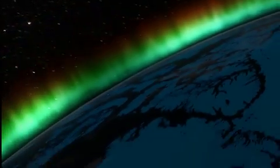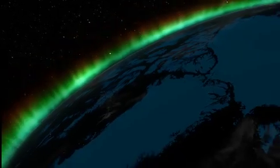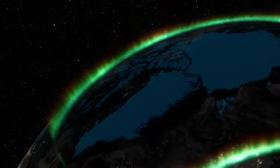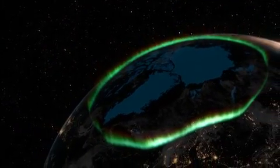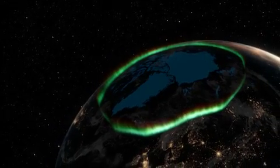The result is a dazzling dance of green, blue, white and red light in the sky forming in a ring-shaped area called the aurora oval.